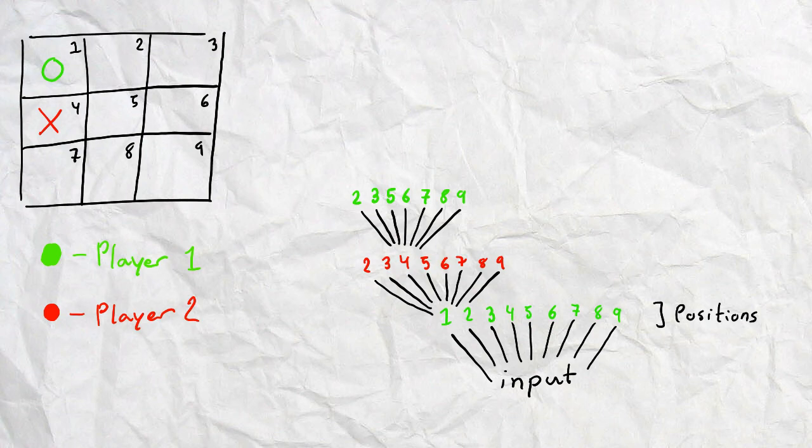And now imagine you choose position number two. Again, we go back to your opponent. He chooses position number five. Then we go back again, and you choose position number three.